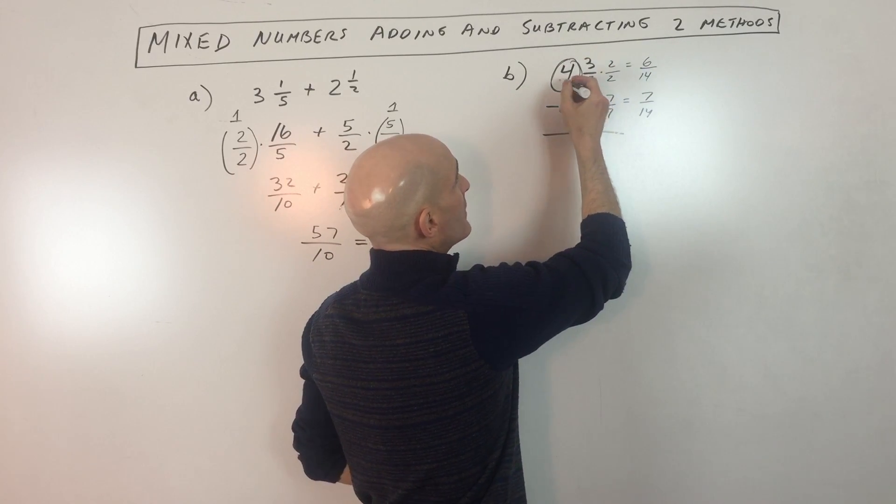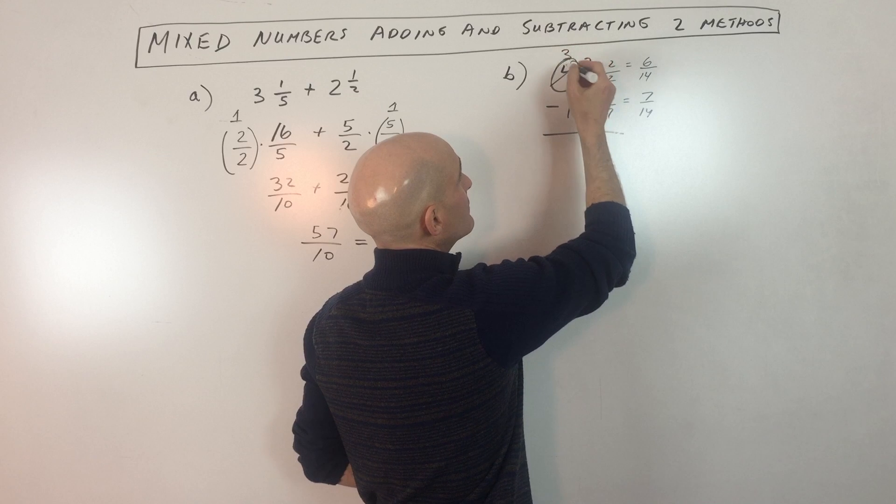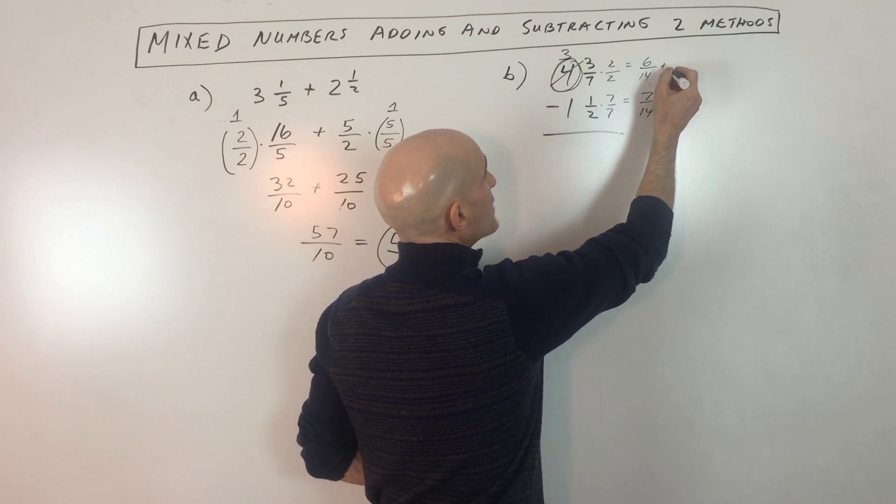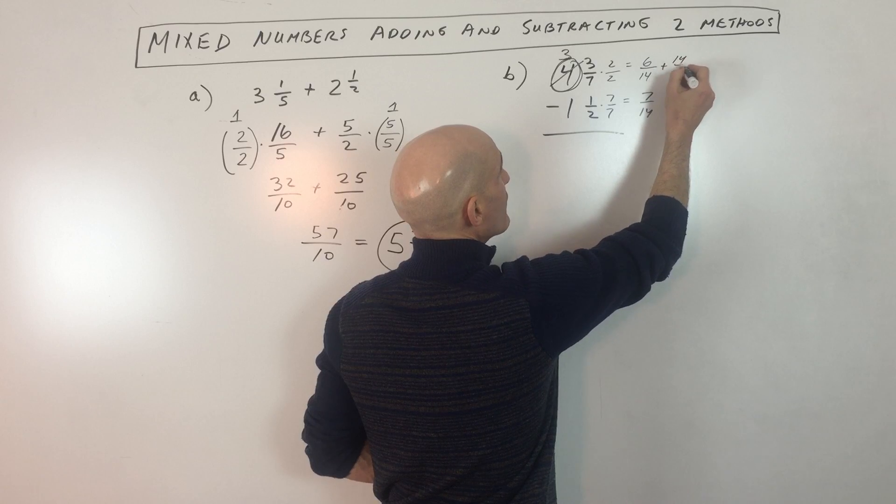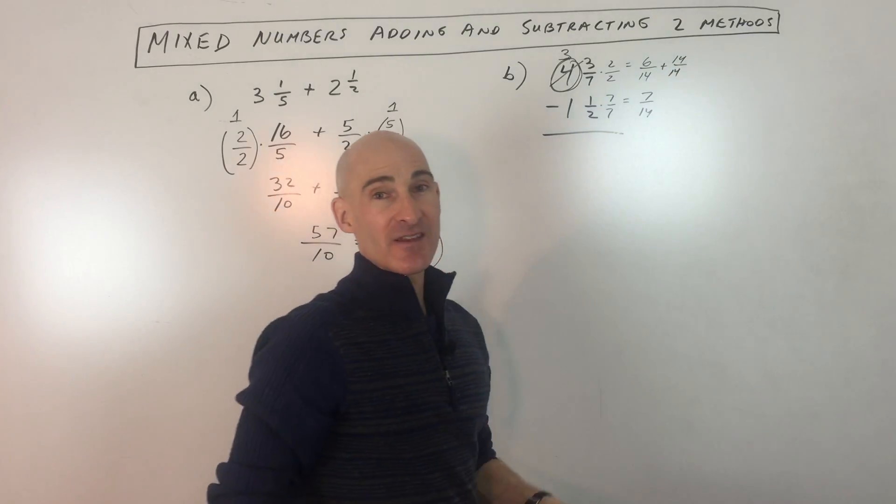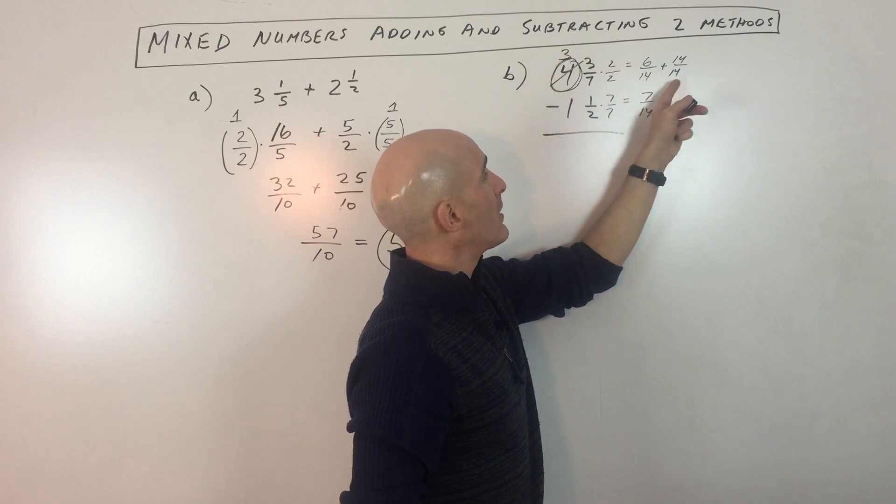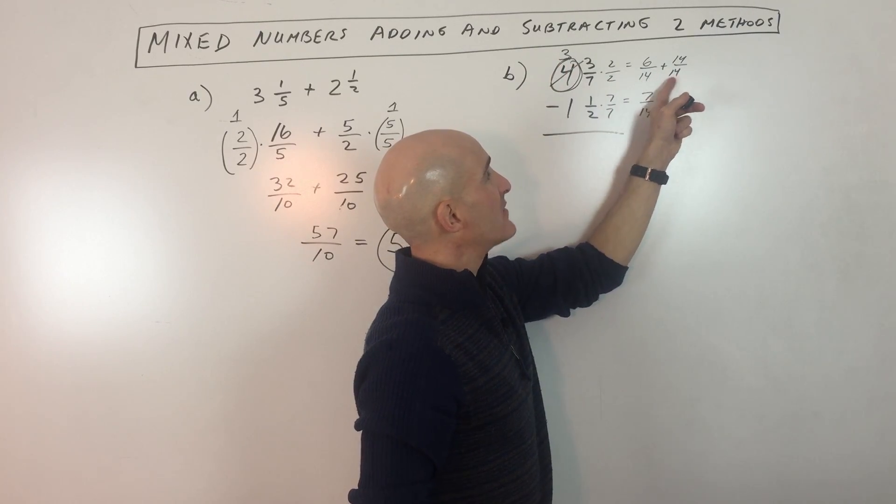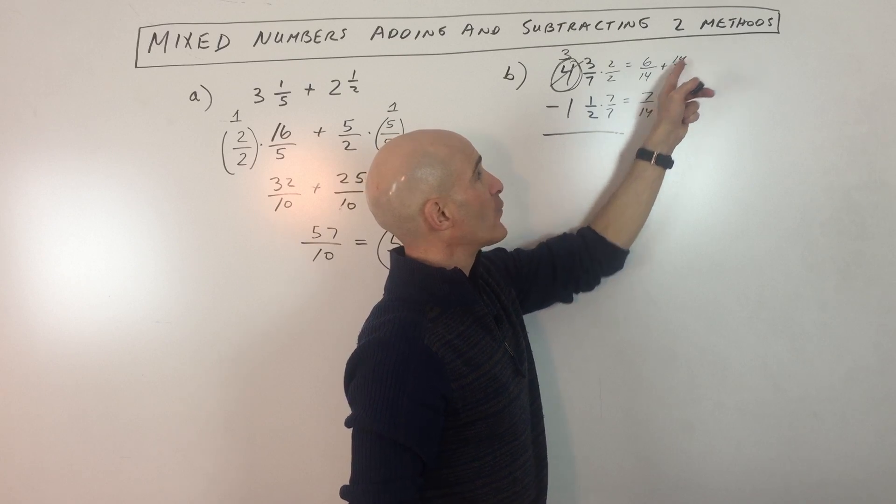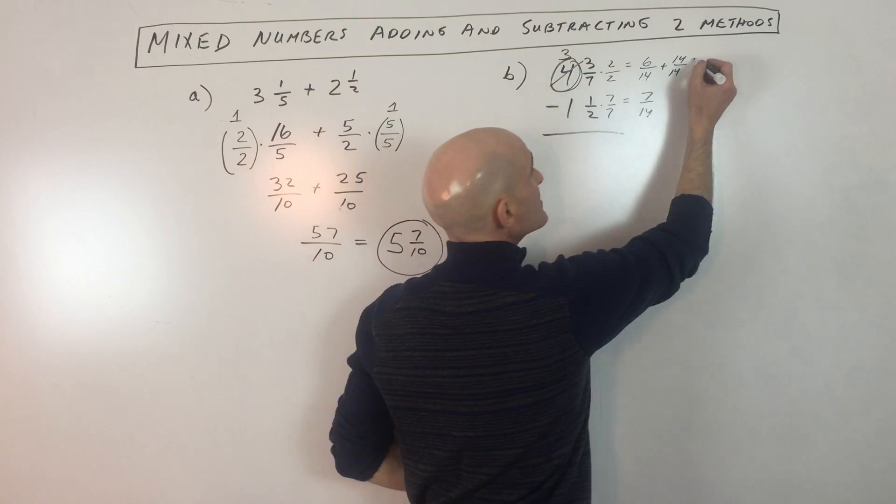So I'm going to change this to three, because we're borrowing one. But what we're actually doing when we're borrowing one is we're borrowing 14 fourteenths. So you can see that we're adding one here because we took away one from the whole number. But I made sure that this had the same denominator as this fraction. So 14 divided by 14 is one. Now we can combine these together.